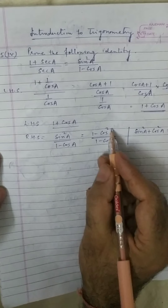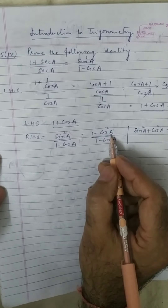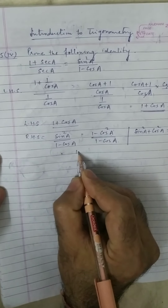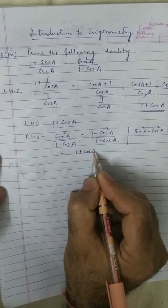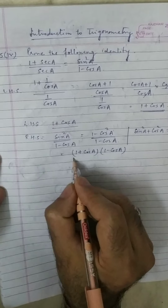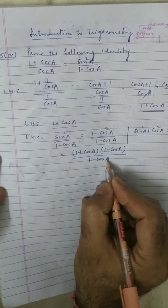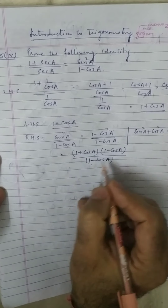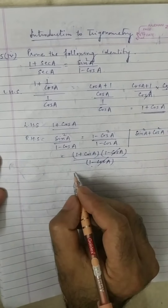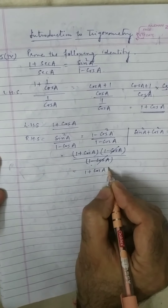Now in the numerator, use the identity a square minus b square equals a plus b times a minus b. So 1 minus cos square a can be written as 1 plus cos a times 1 minus cos a, all upon 1 minus cos a. The 1 minus cos a terms cancel out, and the right hand side equals 1 plus cos a.